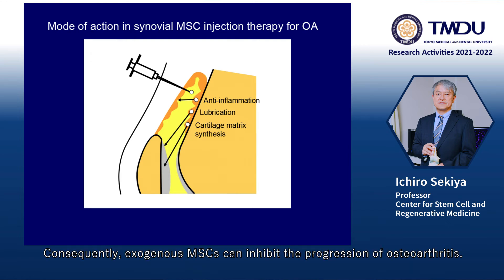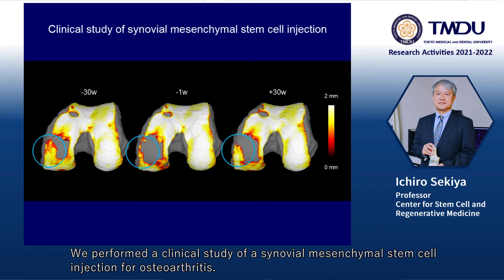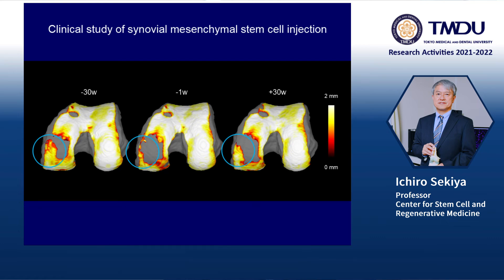Consequently, exogenous MSCs can inhibit the progression of osteoarthritis. We performed a clinical study of a synovial mesenchymal stem cell injection for osteoarthritis. This is a representative case.